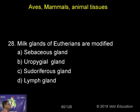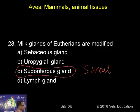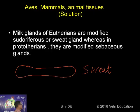In eutherians, the mammary glands are modified sweat glands, otherwise called pseudoriferous glands. So the male glands of eutherians are modified pseudoriferous or sweat glands, and in female eutherians the mammary glands are also modified sweat glands — this applies to the case of eutherians.